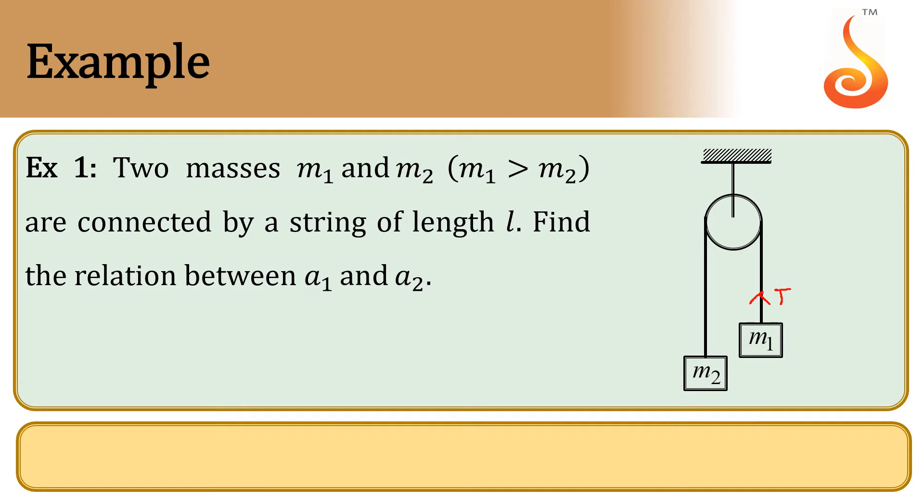On this, tension is acting in the upward direction. Even for M2, tension is acting in the upward direction. Since M1 is greater than M2, let us assume that M1 is going downward with displacement X1 and M2 is going upward with displacement X2.